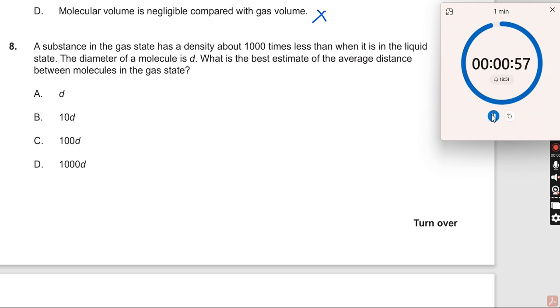Okay, now let us begin with the new one. A substance in the gas state has a density of about thousands of times less than when it is in the liquid state. That is well known because molecules in a gas are very sparsely located.